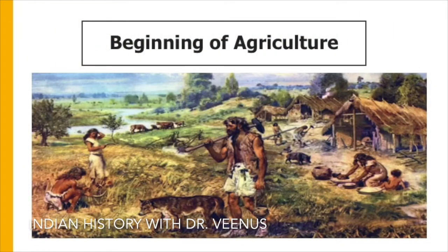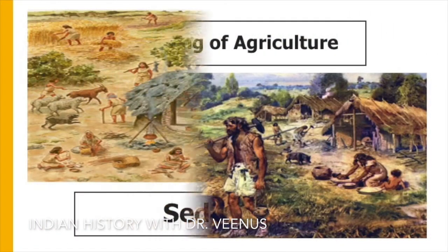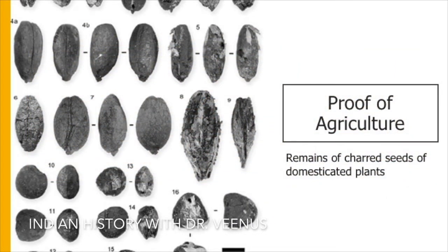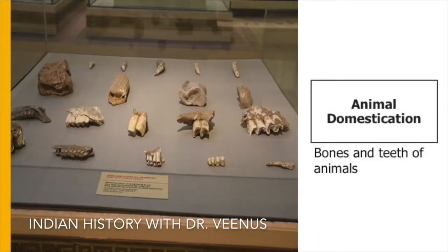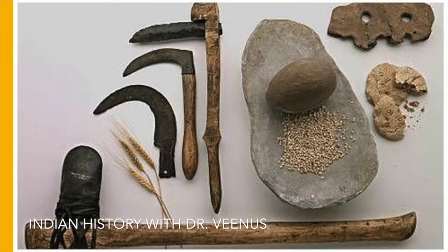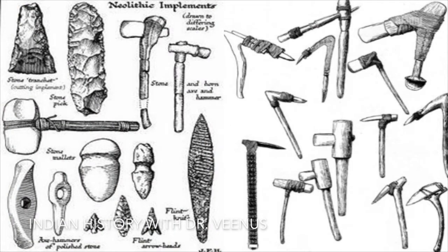With the beginning of agriculture, people started settling down in one place. Sedentism is a key feature of the Neolithic. Proof of agriculture comes from remains of charred seeds of domesticated plants, and that of animal domestication from the bones and teeth of animals showing significant morphological changes. Neolithic households normally lived in built huts of mud, reeds, logs, stones or wattle plastered with clay. For assistance in such activities they manufactured a greatly varied assortment of specialized tools.